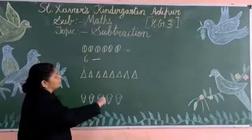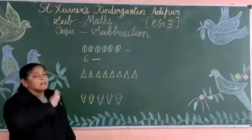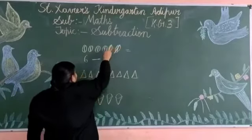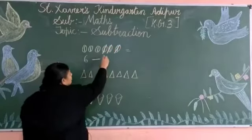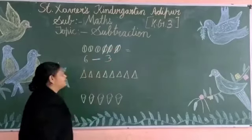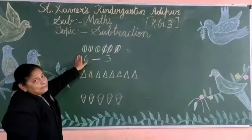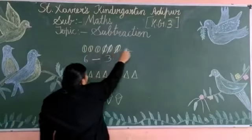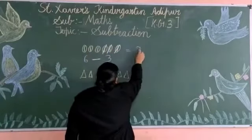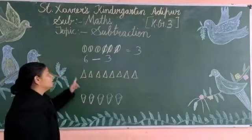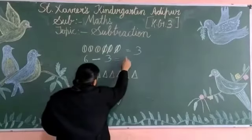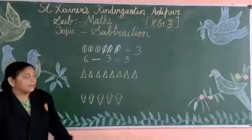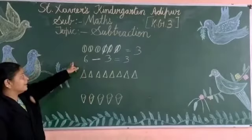Now please remove 3 balls. Cut 3 balls. So 1, 2, 3 — remove 3 balls. Abhi kitna bacha? Count it. 1, 2, 3. Kitna bacha gaya? 3. Toh 6 mein se teen gaya, toh kitna aaya answer? Number 3.